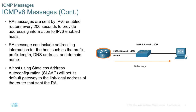Every 200 seconds, the router sends out a Router Advertisement saying it is the router and provides the network information. When a brand new computer is plugged in and turned on, at worst it will wait 200 seconds before receiving network information, but the computer will most likely send a Router Solicitation first asking for the router's information and the router will respond immediately. This also means that if you change something like a DNS server or domain name, within 200 seconds all devices will have the updated information.